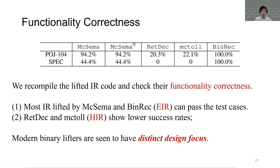Besides, we also recompiled all lifted IR to check their functionality correctness. Most IR lifted by EIR lifters, such as Maxima and BinRack, can pass the test cases, while IR lifted by Reddeck and McToe show lower success rates. This result again demonstrates that modern binary lifters have distinct designs. EIR lifters focus more on functionality, and HIR lifters focus more on readability.